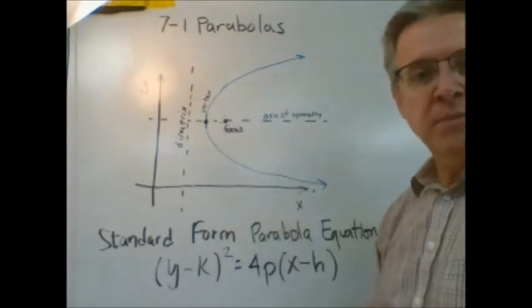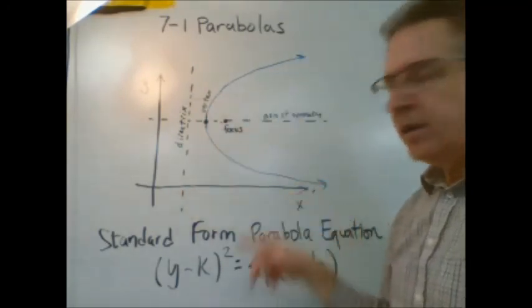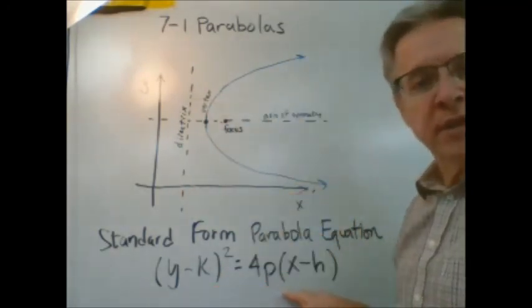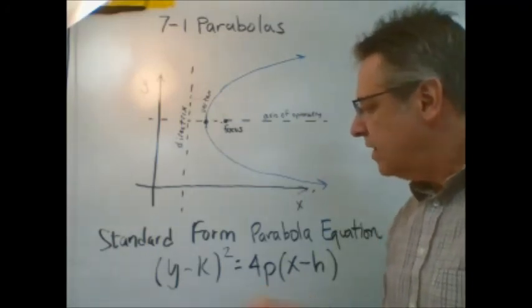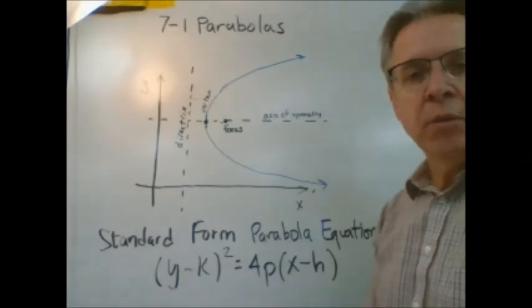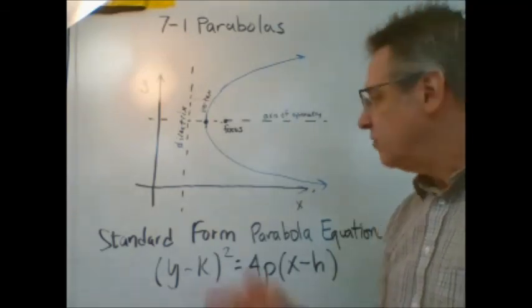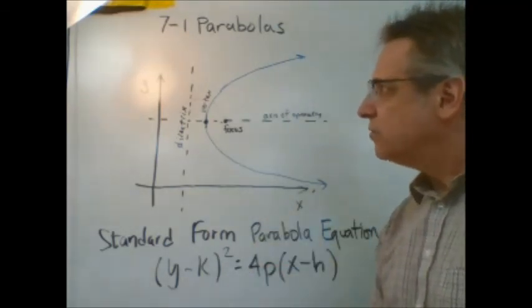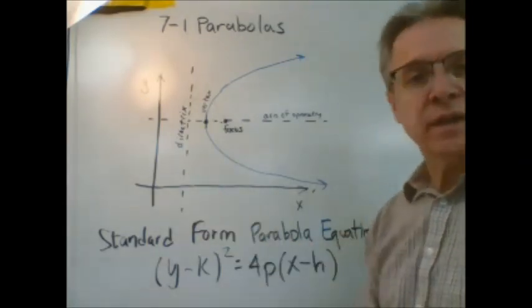And then I'll give you in the attachment parabolas that open up and down. The equation's a little different than this. And we'll talk about that sheet, that attachment, in the next video. And we'll do some examples that will help us to eventually graph a parabola if we know things like the location of the focus and the distance p and the location of the directrix.